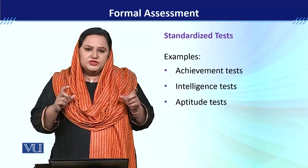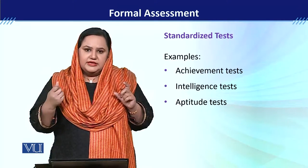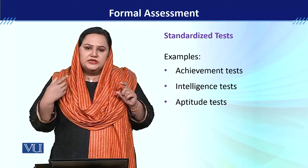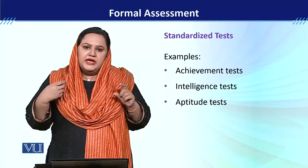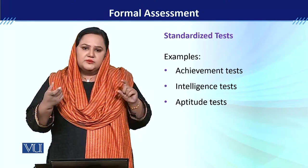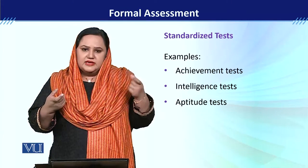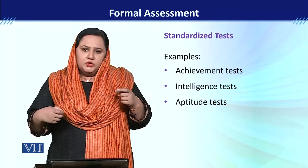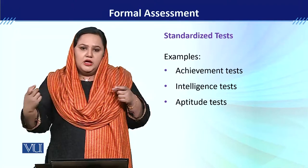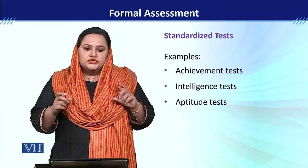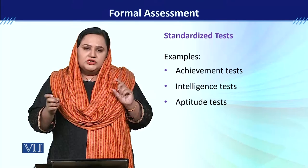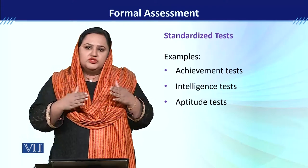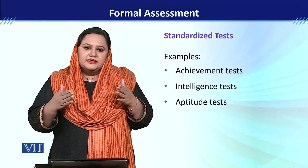IQ level یہ determine کرتا ہے کہ کسی بھی شخص کی intellectual capacity کتنی ہے۔ 100 is the average IQ level۔ جب different intelligence tests بچے کے اوپر administer کیے جاتے ہیں اور if the child scored higher than 100، تو اس کا intelligence quotient above average ہے۔ اور اگر IQ level 100 سے below آئے تو وہ below average ہے۔ Intelligence quotient in reference to chronological age بھی دیا جاتا ہے، یعنی یہ determine کرتا ہے کہ ایک شخص کا mental age اس کی chronological age کے comparison میں کتنا ہے۔